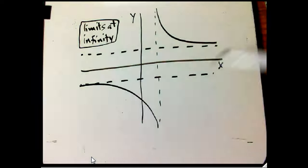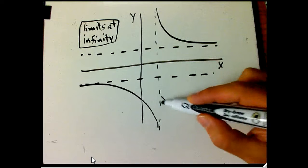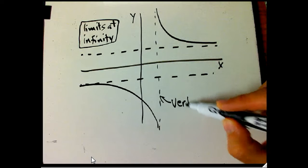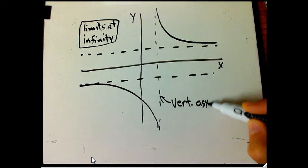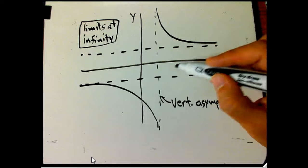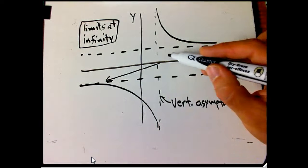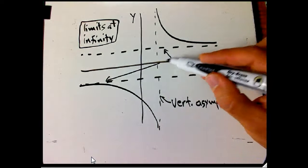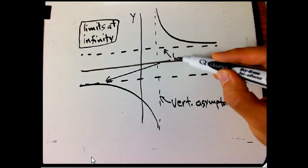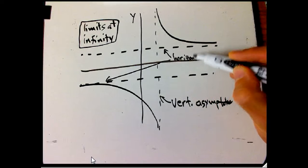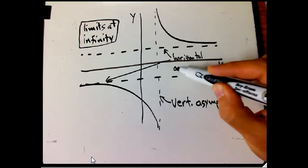So I've just drawn the sketch of a function. We're not going to worry about what kind of formula would produce this function. I just want to point out it has a vertical asymptote and it has a couple of horizontal asymptotes. These guys over here on the left and over here up here on the right, these are both horizontal asymptotes.